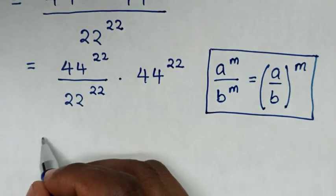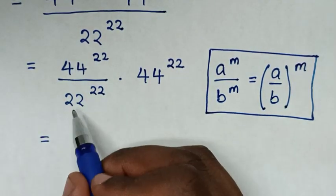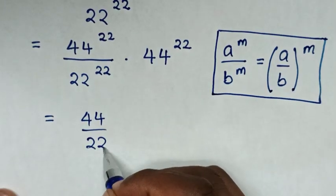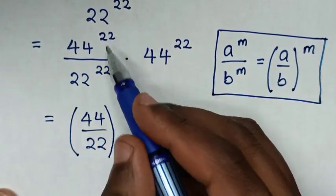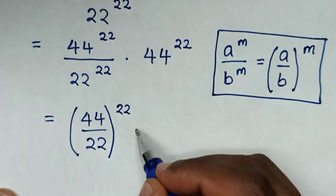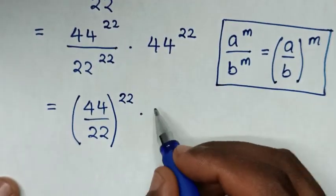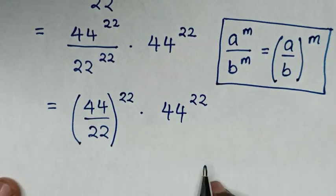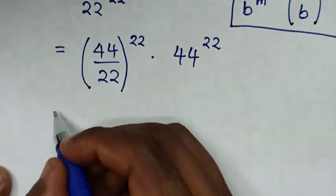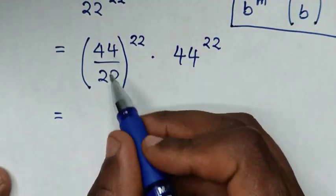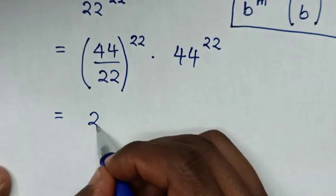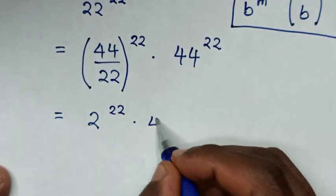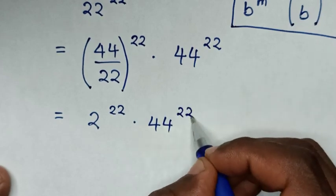So it will be equal to (44 over 22) power of 22. In the next step, 44 divided by 22 is 2, power of 22, then times 44 power of 22.